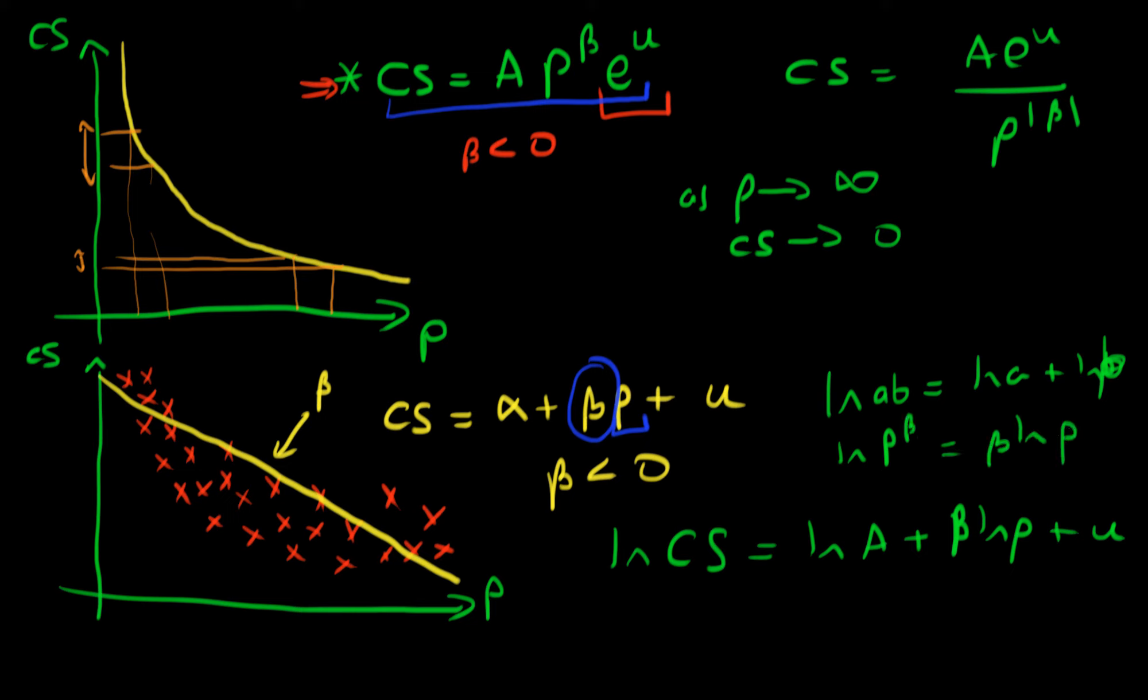So notice that this model which I've got down here or this way of representing our power law distribution is actually linear in the logs. If I was to plot log ρ against log car sales it would actually be a straight line with gradient β which would be a constant.